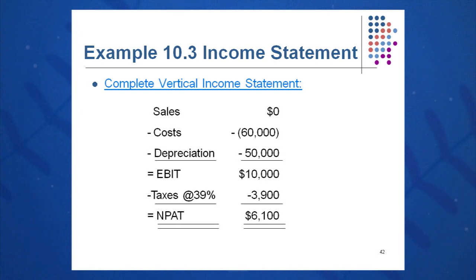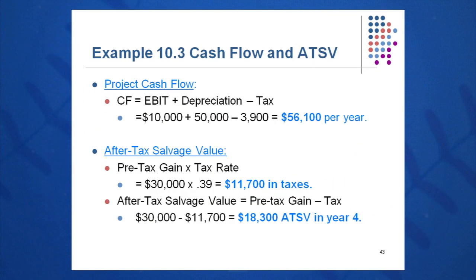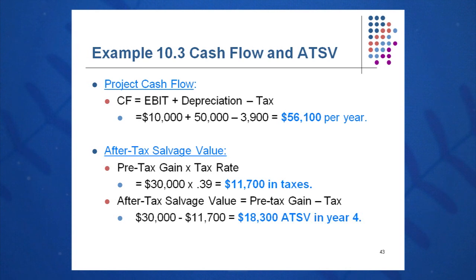Taxes at 39% are $3,900, giving an NPAT of $6,100. Using the bottom-up OCF method — since there's no interest expense — OCF equals $56,100 each year, coming in for four years. For after-tax salvage value, the $30,000 gain on sale triggers $11,700 in taxes at 39%, so after-tax salvage value is $18,300, which is the cash inflow in year four.